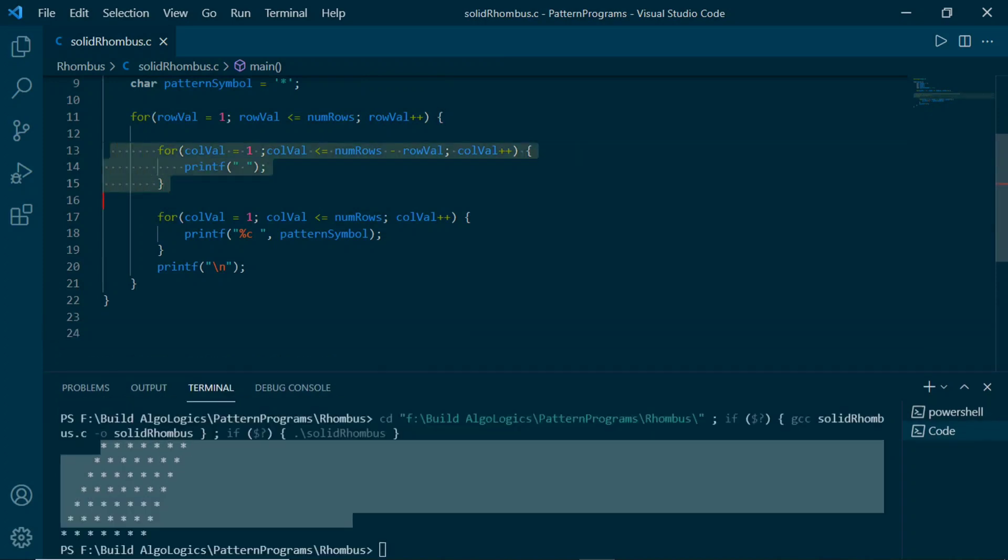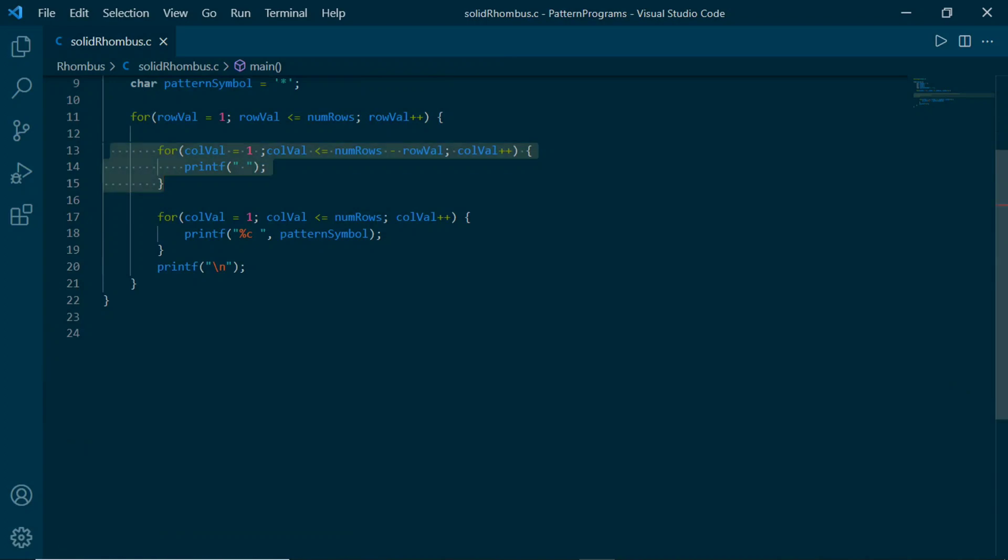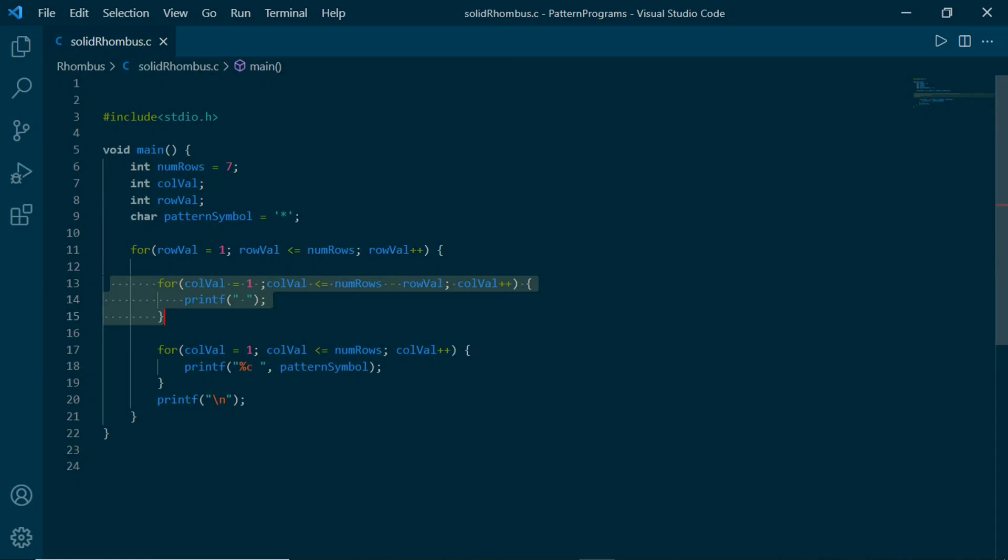We just need to add this for loop in our next patterns. As you already written code for these patterns in previous tutorial, such as hollow square, hollow square with cross, and hollow square with diagonal, you can simply modify them by adding this extra for loop in those patterns, as I am showing you here. You can also find the link in the description of this video from where you can download source codes of these patterns.